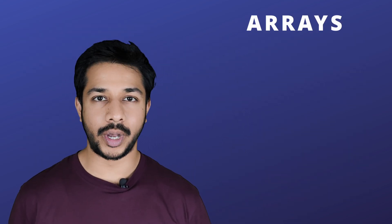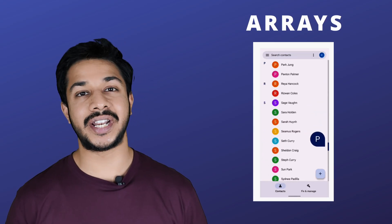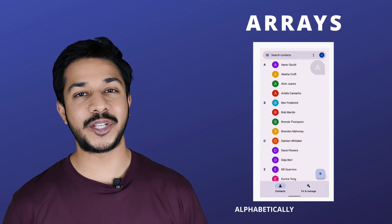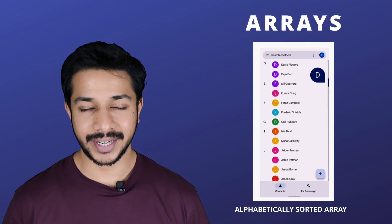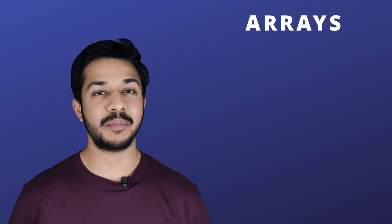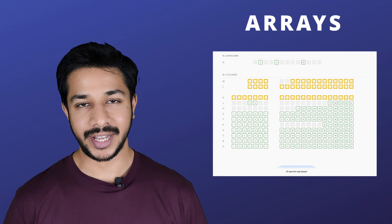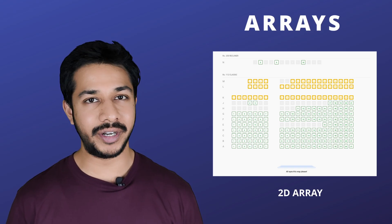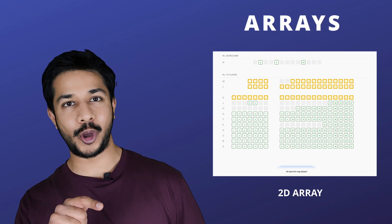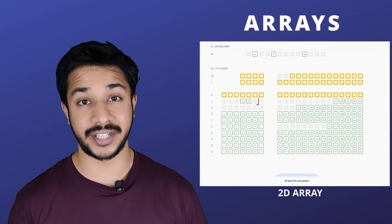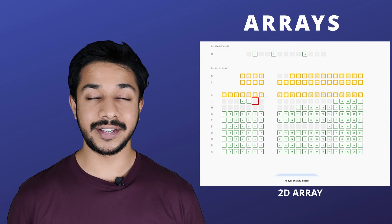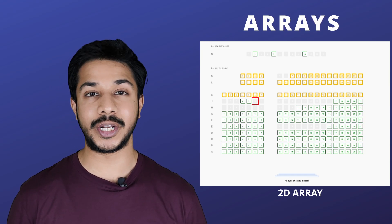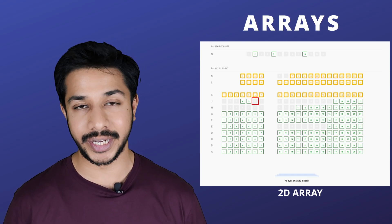We will start with examples of arrays. Number one: your phone contact list — it's an alphabetically sorted array. Number two: movie ticket booking — it's a classic example of a 2D array. When you book a movie ticket, you choose a row and column like J6, and this arrangement of row and column is a 2D array.